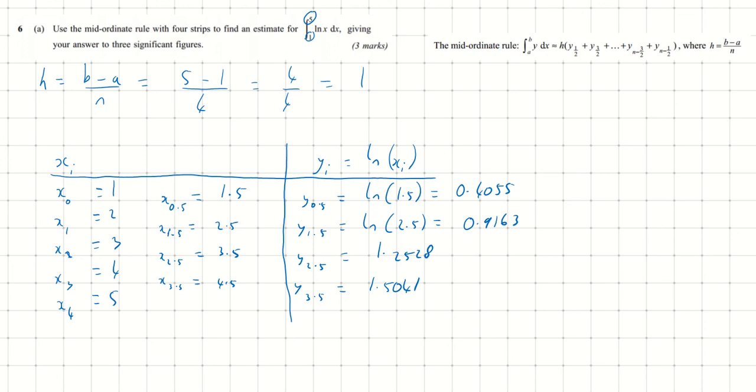We're basically done now. All we need to do is plug these numbers into the mid-ordinate rule formula. The integral from 1 to 5 of ln(x) dx is approximately equal to h times the sum of the mid-ordinate y values. So it's h, which is 1, times (y0.5 + y1.5 + y2.5 + y3.5).